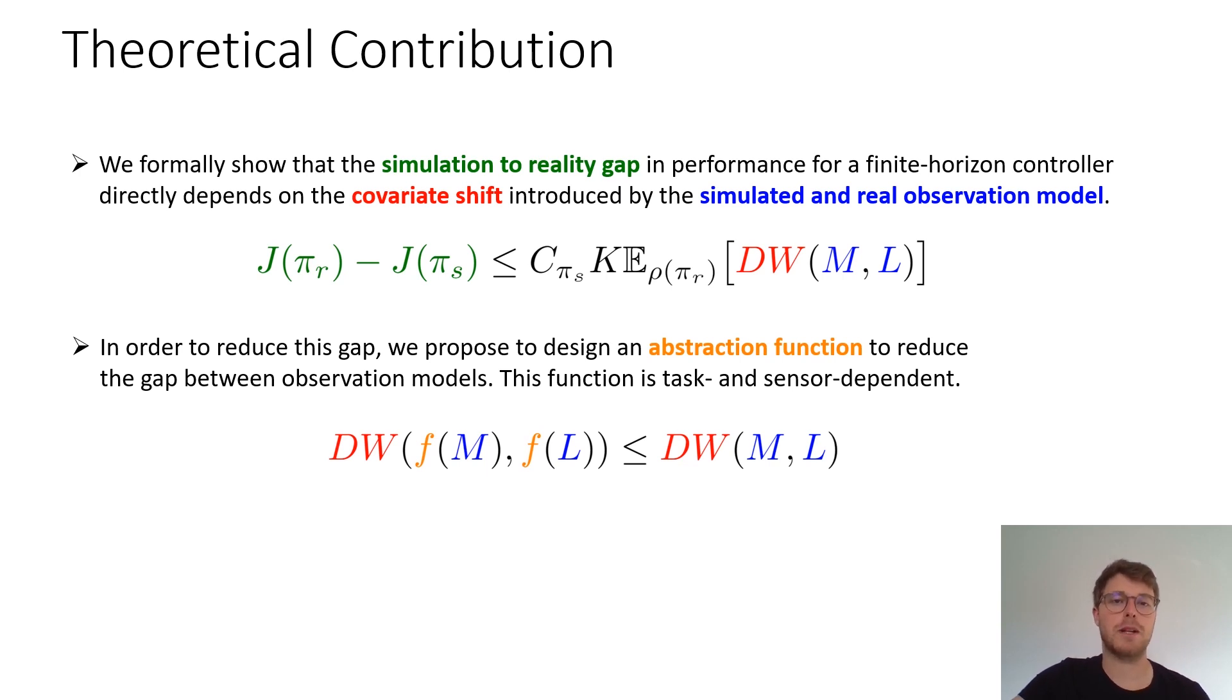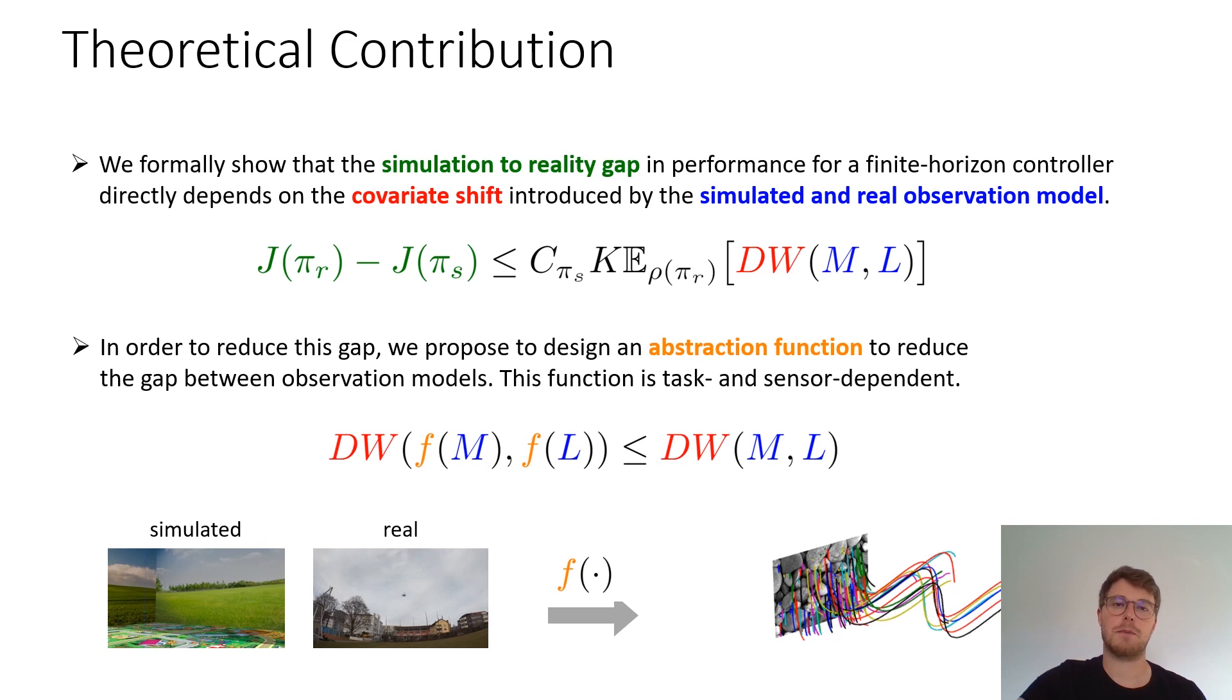Finding such a function typically requires domain knowledge since it is task and sensor dependent. To give you an example, in our project the abstraction function takes the form of feature tracks. So we transform image streams here seen on the left to feature tracks seen on the right and we show that feature tracks transfer better from simulation to reality.